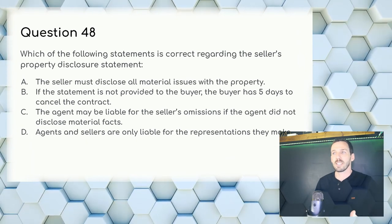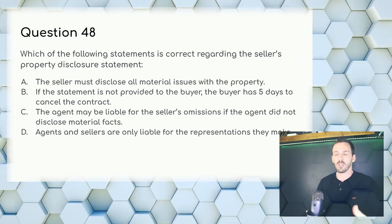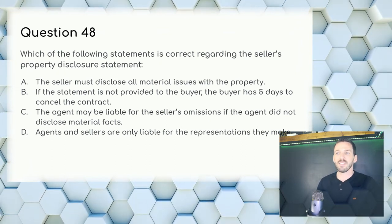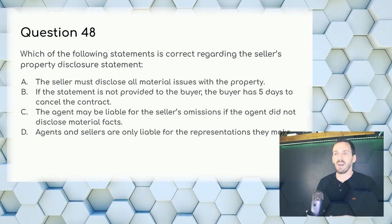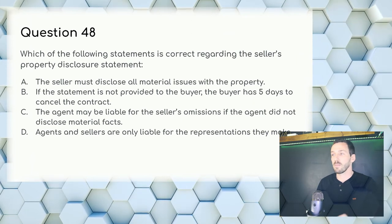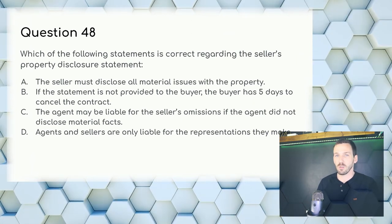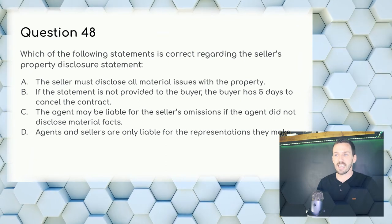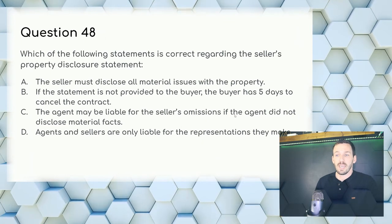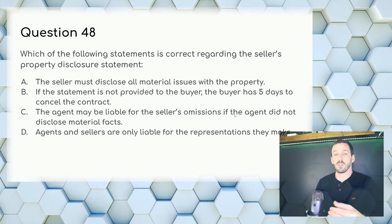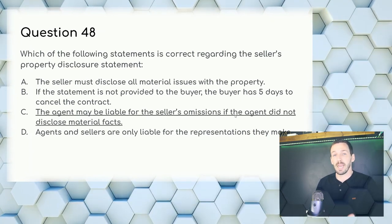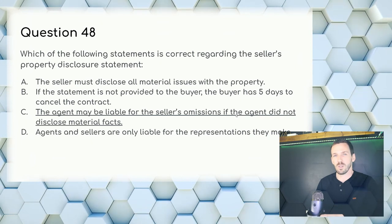Question 48: Which statement is correct regarding the seller's property disclosure statement? B can be crossed off — it's three days to cancel the contract, not five days. Answer: C — the agent may be liable for the seller's omissions if the agent did not disclose material facts. Always disclose material facts.